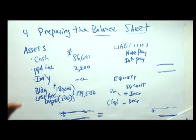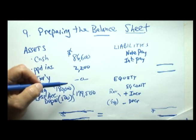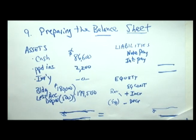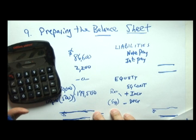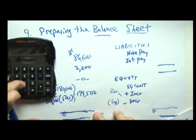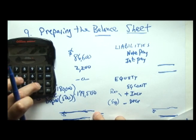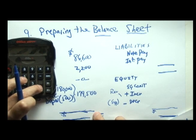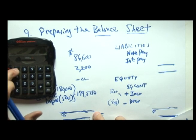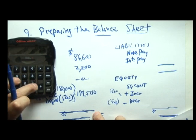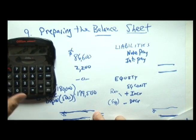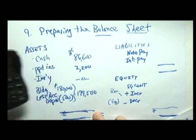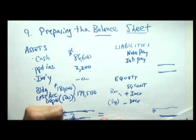Now let's add up all of these numbers using the calculator. We have eighty-six thousand six hundred in cash, twenty-two hundred in prepaid insurance, and one hundred seventy-nine thousand five hundred for the building. That gives us total assets of two hundred sixty-eight thousand three hundred.